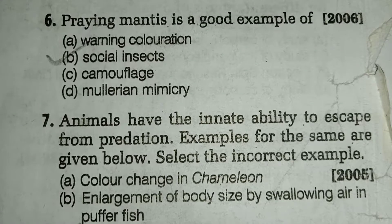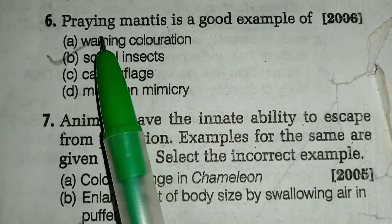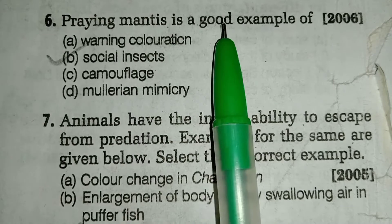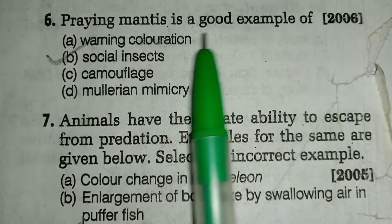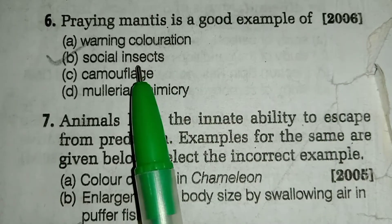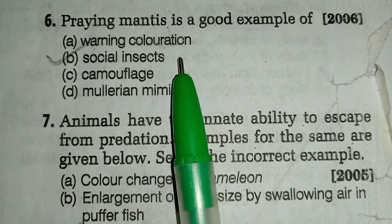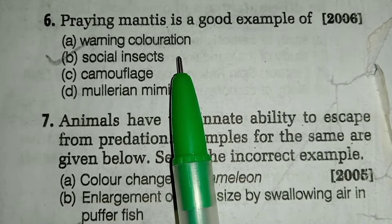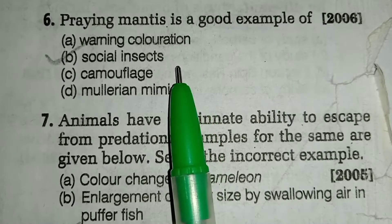Welcome to biology MCQ series. Question number six: praying mantis is a good example of — the answer is option number B, social insect. Praying mantis is a large social insect; it has a small triangular head.